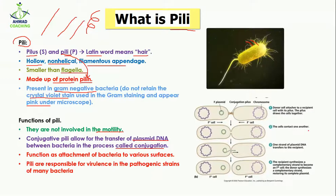In the process of conjugation, two bacteria are going to exchange their plasmid DNA — not chromosomal DNA, but plasmid DNA. For this reason, the pili of the two bacteria fuse together to form a connection or a bridge. When the bridge is developed, one strand of plasmid DNA moves from one bacterium and enters into the second bacterium. After that, the bridge dissolves. In this way the two bacteria exchange their plasmid DNA, and this process is known as conjugation.